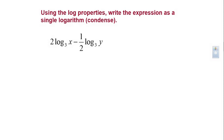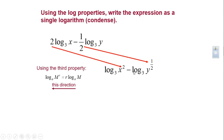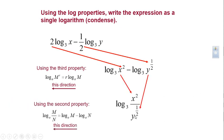Condensing 2·log base 3 of x − (1/2)·log base 3 of y: move coefficients back as exponents to get log base 3 of x² − log base 3 of y^(1/2). Since it's a subtraction with the same base, the positive argument goes to the numerator and the negative argument goes to the denominator: log base 3 of (x² / y^(1/2)), which can also be written as log base 3 of (x² / √y).